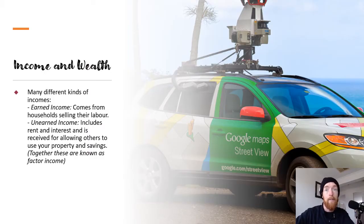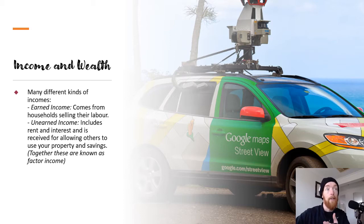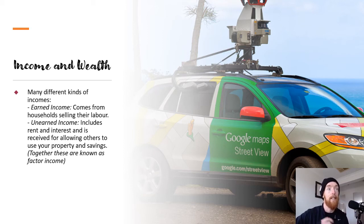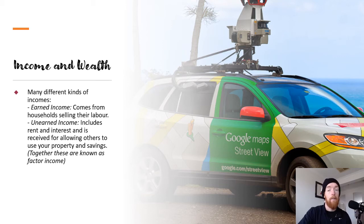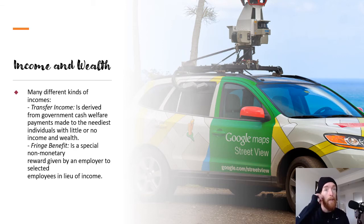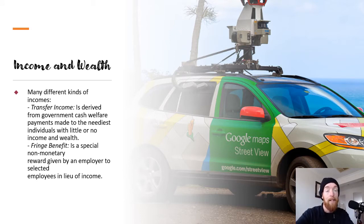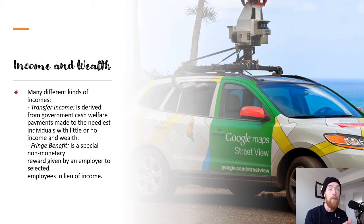So some different kinds of income. First up, we've got earned income, which comes from selling your labor — it's what you earn, you work for it, and you get it. Then we've got unearned income, which includes things like rent and interest, received by allowing others to use your property and savings. Together these are known as factor income, because they form part of your whole income. Then we have transfer income, which is basically what we often call welfare — it's the official name because it's what the government transfers to people with the expectation of nothing in return.